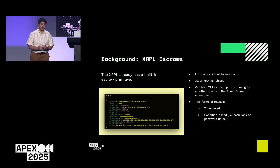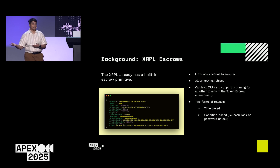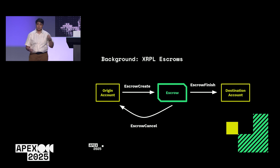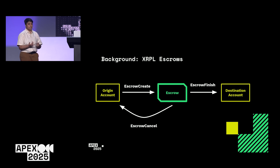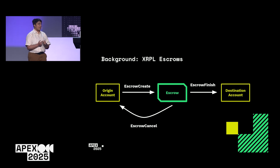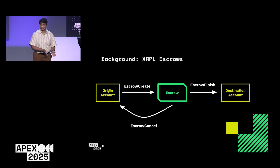There are two forms of release. You can do time-based — after a certain amount of time you can release the funds — or condition-based, often known as a hash lock in other ecosystems. Essentially you provide a password and the escrow will unlock and those funds are released. In diagram form: you have your origin account, you submit an escrow create transaction with parameters like amount and release conditions. To finish the escrow you use the escrow finish transaction, which transfers funds to the destination. Or you can use the escrow cancel transaction to send funds back to the origin.